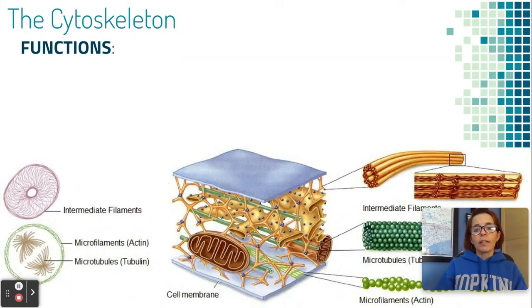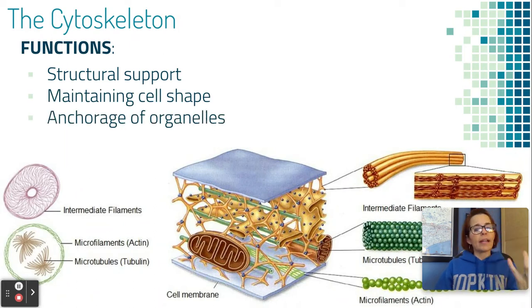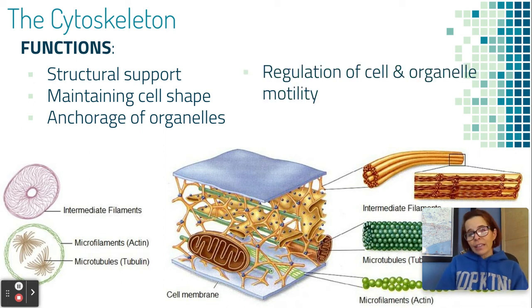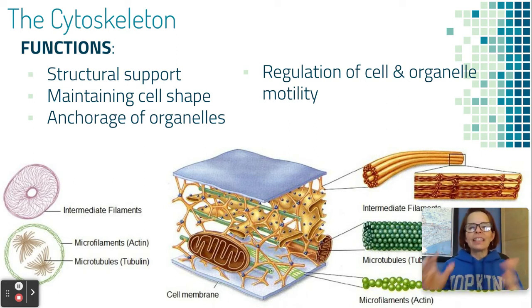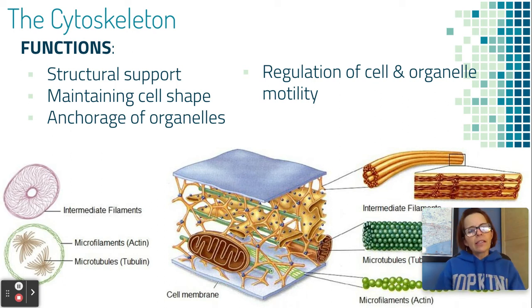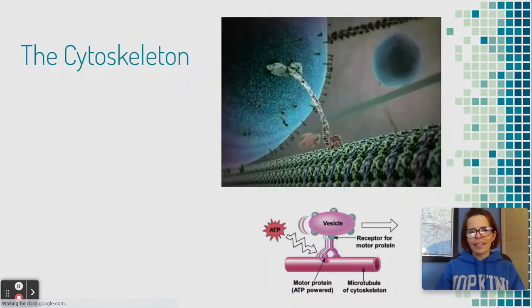So what are some functions of the cytoskeleton? It provides support for the cell and keeps the cell from collapsing in on itself. It anchors organelles into the correct location so they're not in the wrong place — certain reactions require organelles to be in the right place. The cytoskeleton also regulates cell and organelle movement, and it moves chromosomes during cell division.